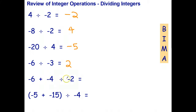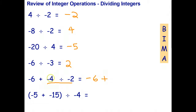Now, what if we've got multiple operations? Here we've got an addition and a division; here we've got an addition in brackets and a division. The order of operations I like to use is BEMA: first do anything inside brackets, then indices or powers, then multiplication and division left to right, and finally addition and subtraction left to right. For this question with an addition and a division, I have to do the division first. I rewrite it as negative six plus — a negative divided by a negative is a positive — so that becomes negative six plus positive two, and then the addition gives me negative four.